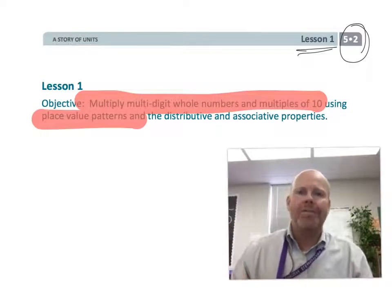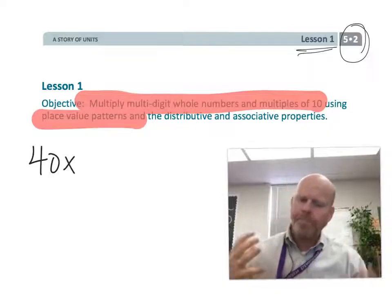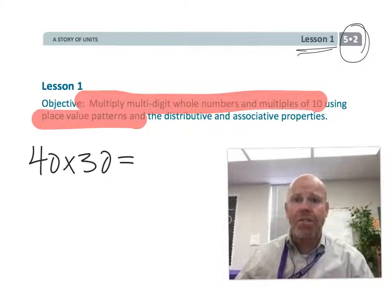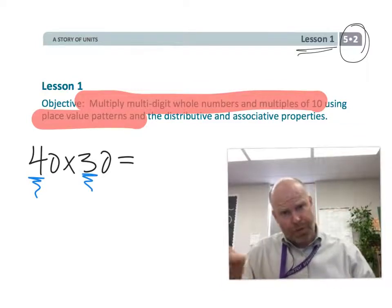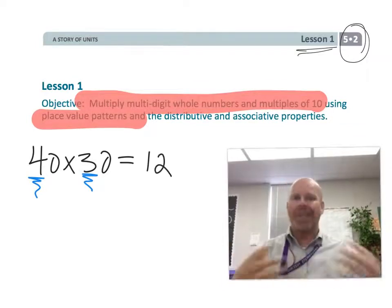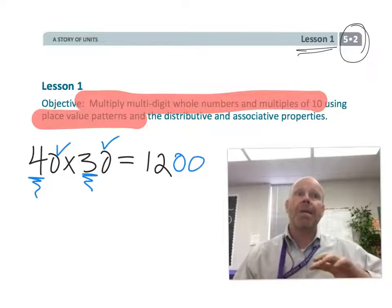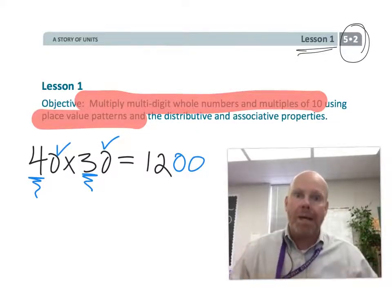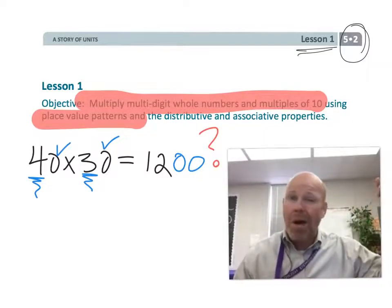This means the idea of we know, for example, 40 times 30 - the classic trick teachers would teach is take the 4, take the 3, multiply to get 12, stick on the two zeros and that's your answer. The point of this lesson is to explain the mathematical underpinnings of why that makes sense, so math is more than just a trick to memorize but has some meaning to it.